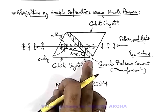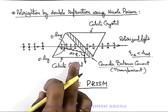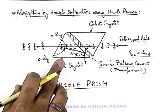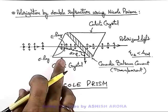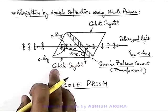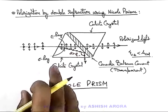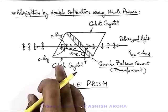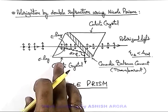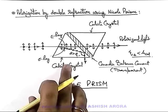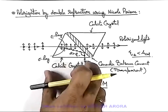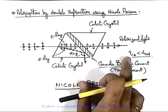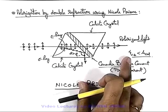The Nicol prism was one of the first polarizing devices, made by the scientist Nicol, the physicist who was working on optical phenomena. It was the first optical device used for polarization of light.